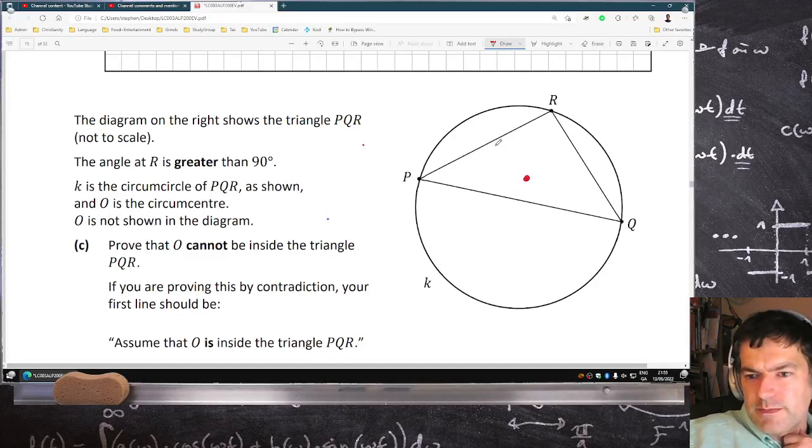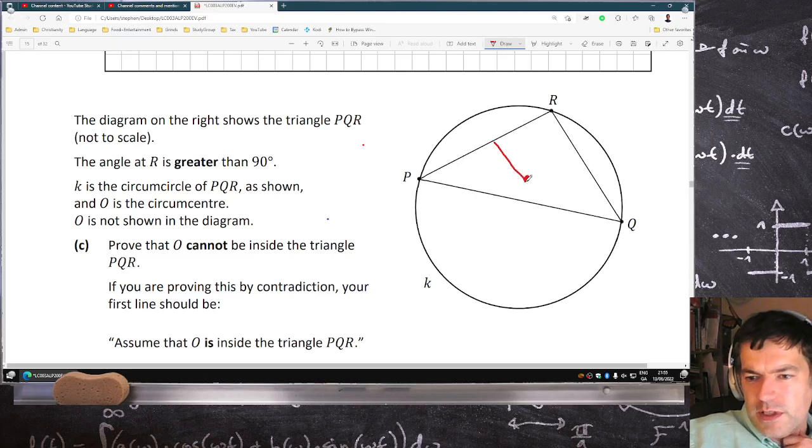Now, draw perpendicular lines here, here, and here. 90, 90, 90. And they're equal, and they're equal because of the midpoint, and they're equal.